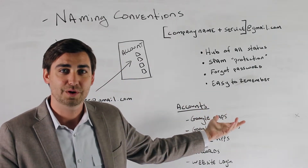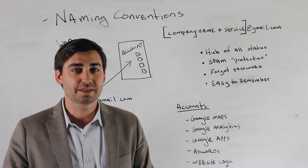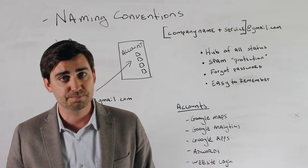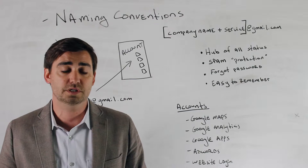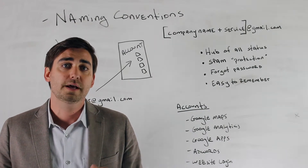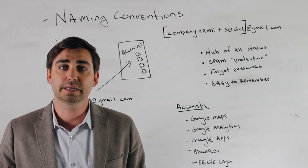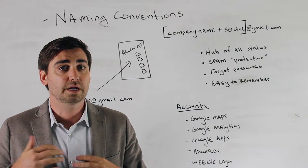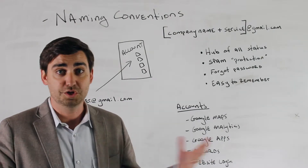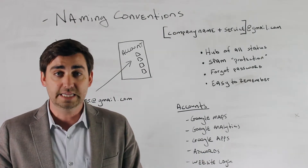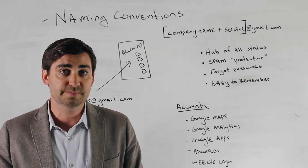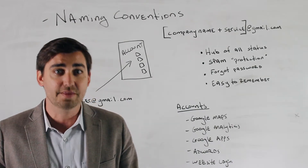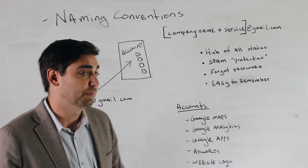The last part is it's really easy to remember. You of course want to put this on an Excel sheet or use something like LastPass, which is hosted in the cloud. But when it's easy to remember, it means that if somebody is out of town or at lunch and you need to get in, you can easily go to that Gmail account almost by guessing, and then once you're in, use it as a hub.